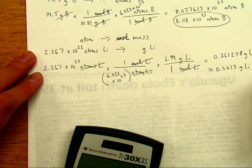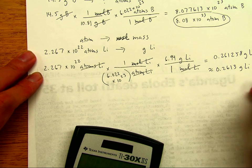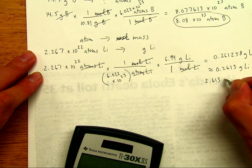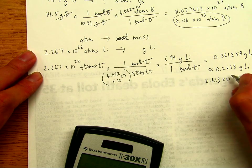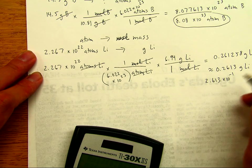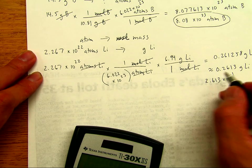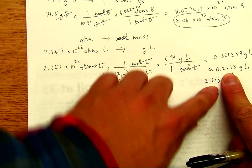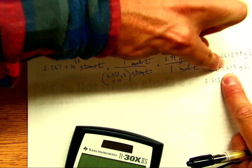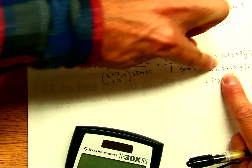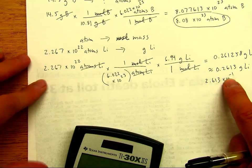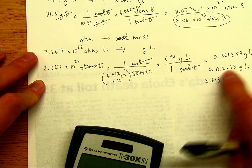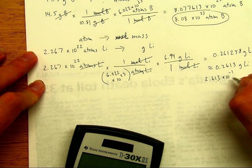If your teacher wants the answer in scientific notation, this would be 2.613 × 10⁻¹. It's negative because to express 0.2613 in scientific notation, the decimal must shift, requiring multiplication by a negative power of 10 to decrease the number by a power of 10. So the final answer is 2.613 × 10⁻¹ grams of lithium.